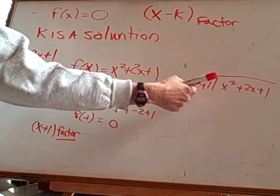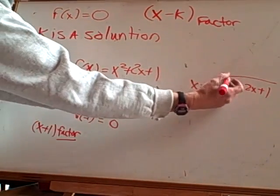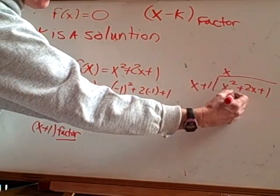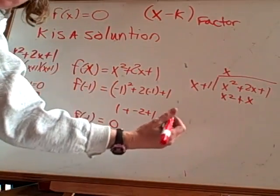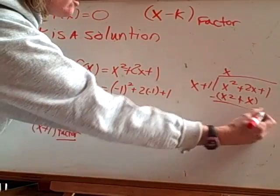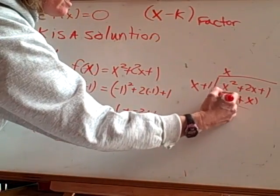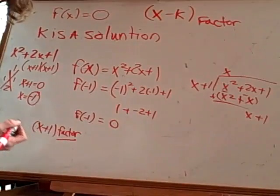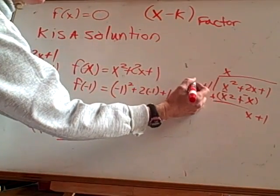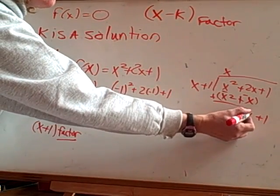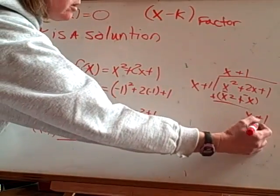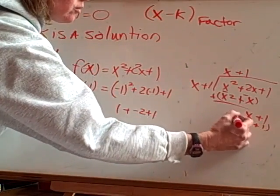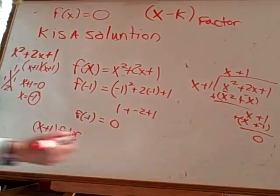Well, you look at this first term. What do I have to multiply x by to get to x squared? X. So x times x is x squared and x times 1 is x. Put that in parentheses. Subtract the whole thing out. Add opposite, opposite. So I end up with a remainder of 0.